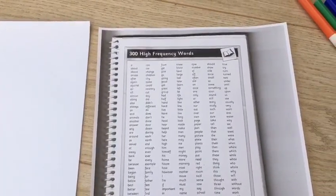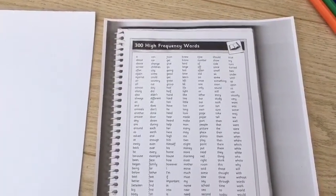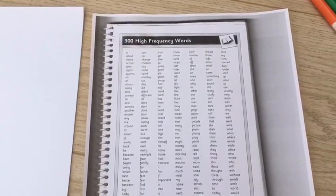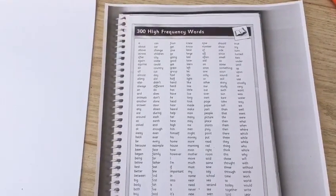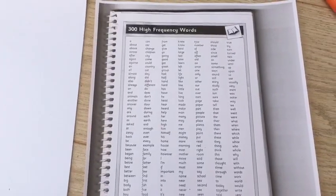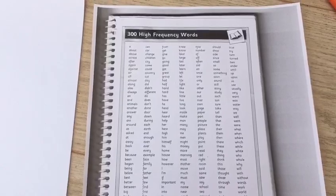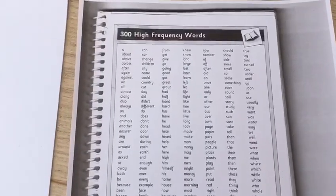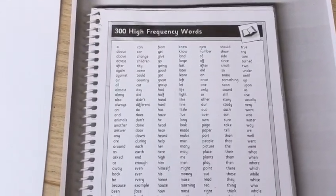First of all find this page in your homework diary. This is the 300 high-frequency words. If you think you might know most of these words, you've also got the year 3 and 4 words and the year 5 and 6 words that you can have a look at as well. You need to start by finding which words you don't know how to spell.